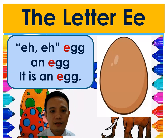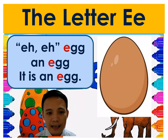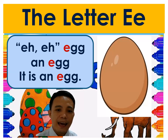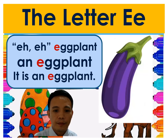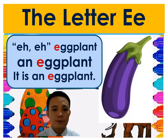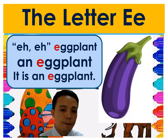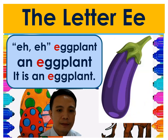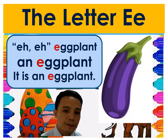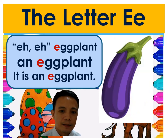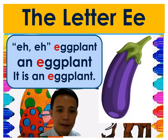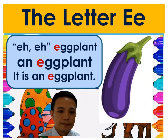Can you repeat that? Eh, eh, egg. An egg. It is an egg. Next, we also have this one — what is it? Eh, eh, eggplant. An eggplant. Eh, eh, eggplant. It is an eggplant.